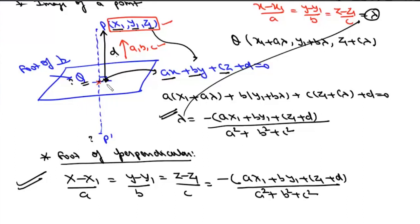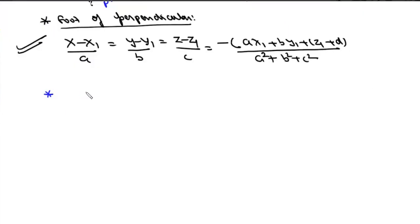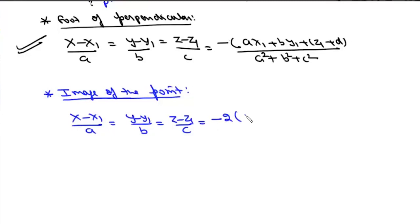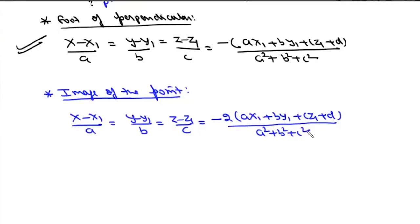The image P' is at twice the distance from P compared to Q. The shortcut for the image of point (x1, y1, z1) in the plane is: (x - x1)/a = (y - y1)/b = (z - z1)/c = -2(ax1 + by1 + cz1 + d) / (a² + b² + c²).